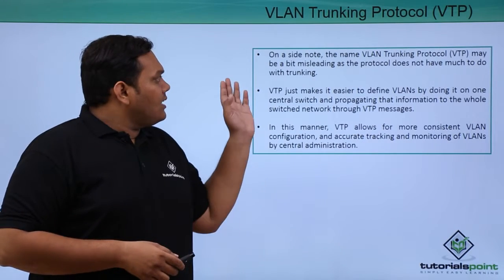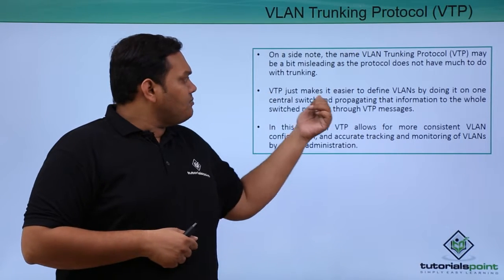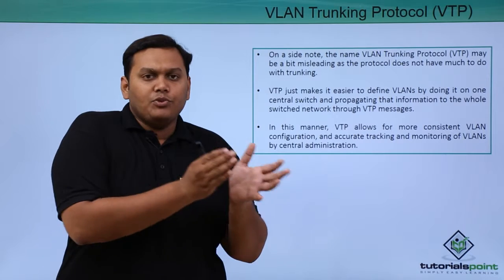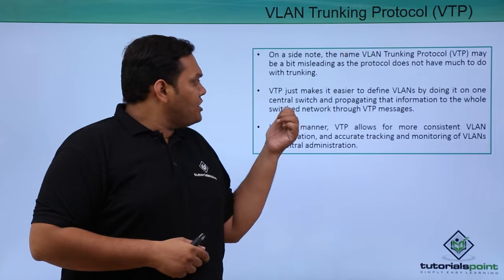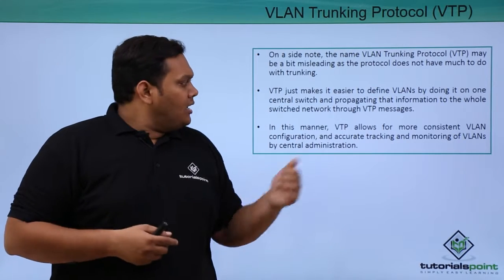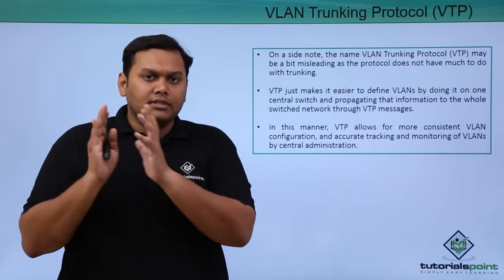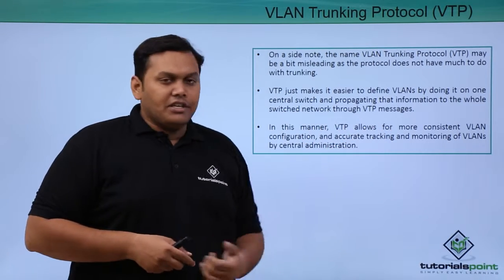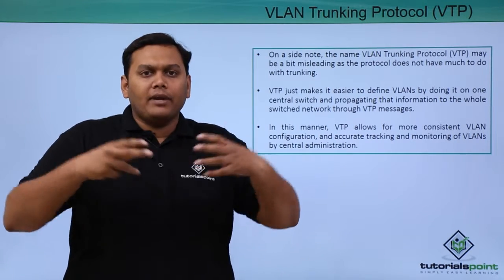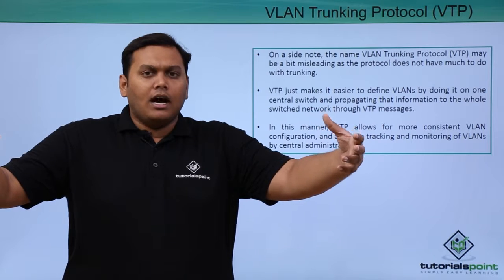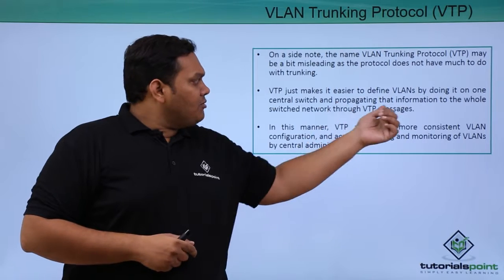To address this, VLAN Trunking Protocol was introduced. VTP makes it easier to define VLANs because if you make changes to a central switch, that information is propagated to the whole interconnected switch network through VTP messages. When VTP is configured on a central switch, it propagates VTP messages to all other linked switches in the network.